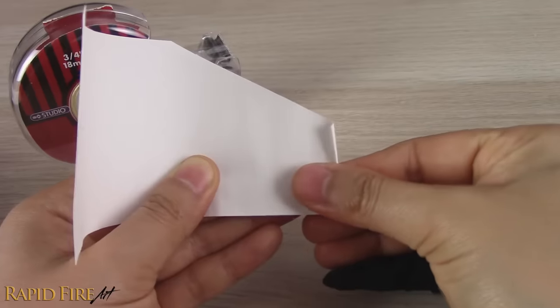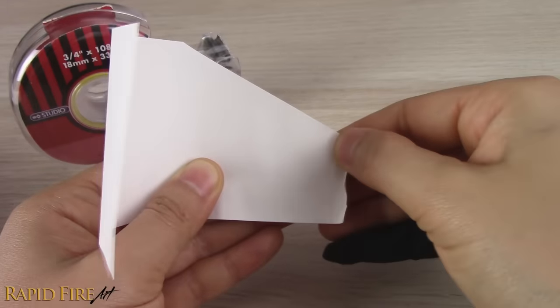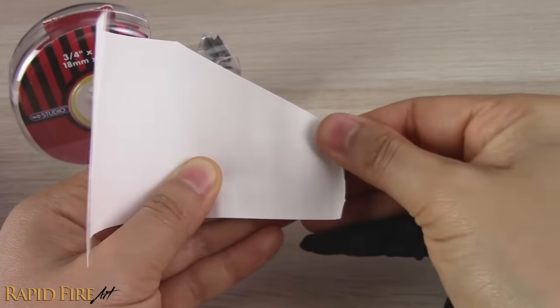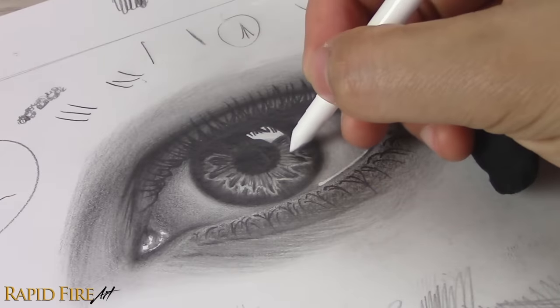Anyway, the reason we want a pointy blending stump is it makes it a lot easier to blend small details within your drawing. Precision blending.